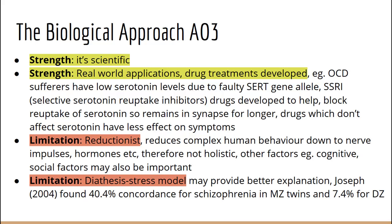A further criticism is that the diathesis-stress model may be more useful. This suggests that genes give people a vulnerability to developing certain characteristics, such as schizophrenia, however stressors in the environment decide whether or not they will become schizophrenic. If all behavior were determined by genes, there should be a 100% concordance rate for conditions like schizophrenia in monozygotic twins who share 100% of their DNA, but there is rarely a 100% concordance rate for mental disorders.